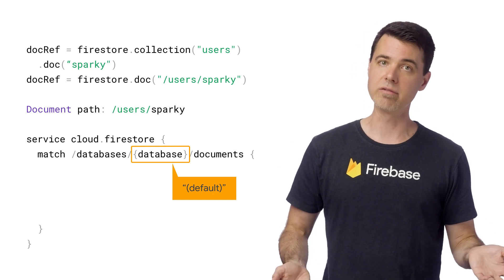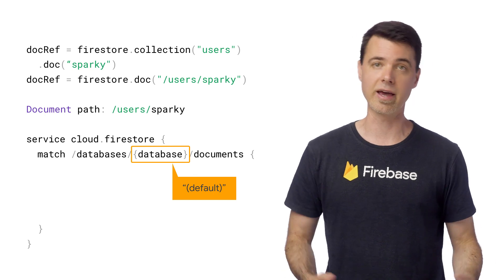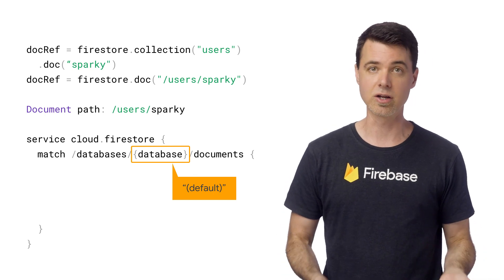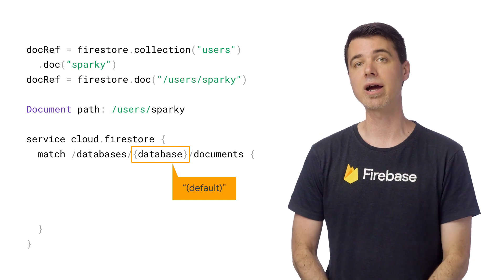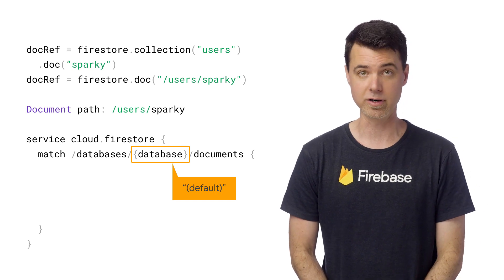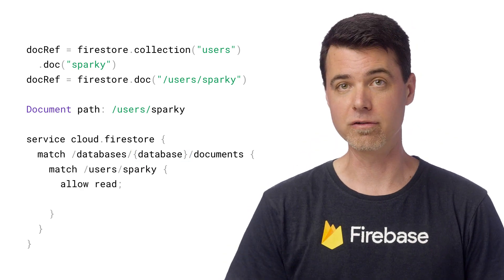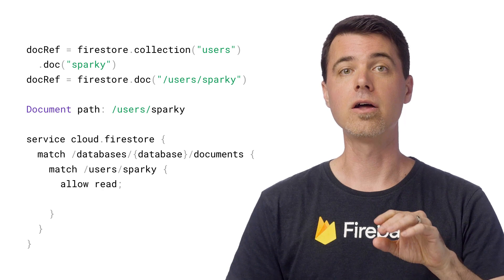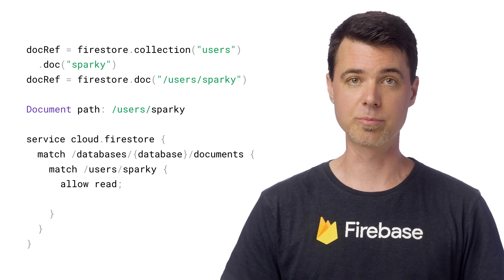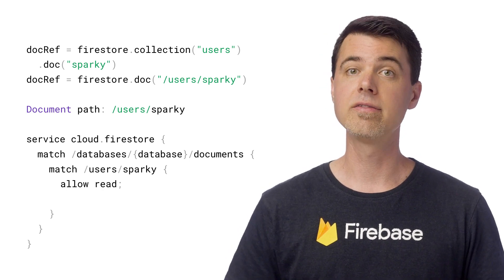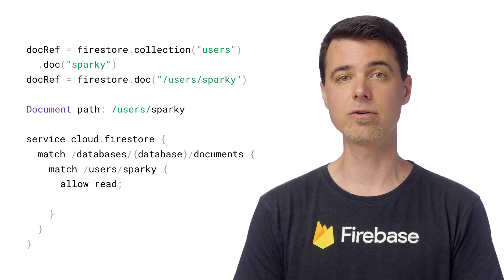Currently, there is only one value that it'll match, and that's default in parentheses, as each project can only have one Firestore database. But it's standard practice to use a wildcard here. This is all boilerplate so far, but I'll nest another match that calls out the path of the document to protect. And the nested allow statement gives everyone read access to it.